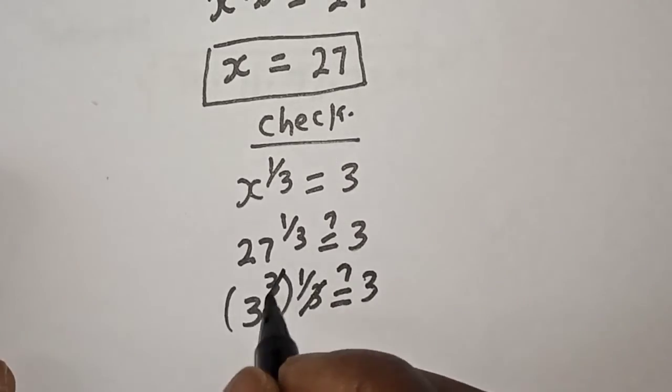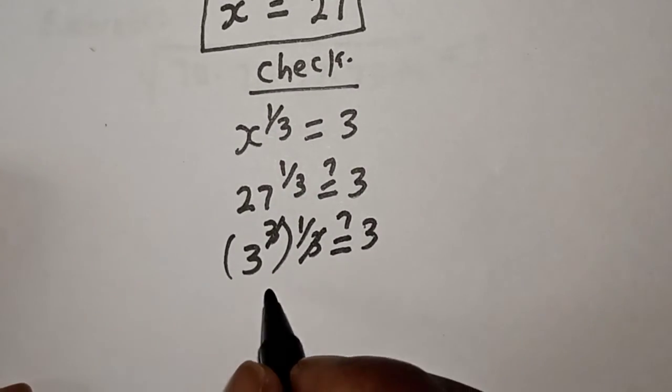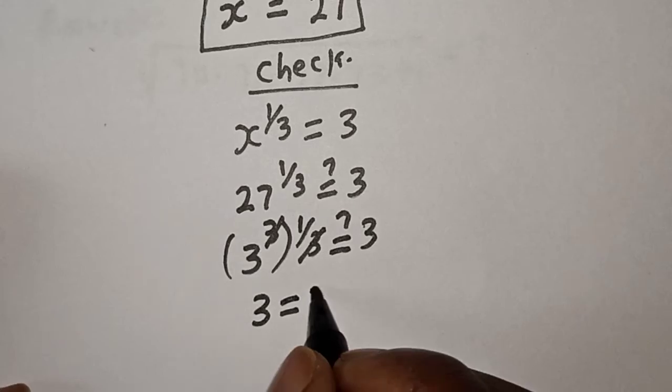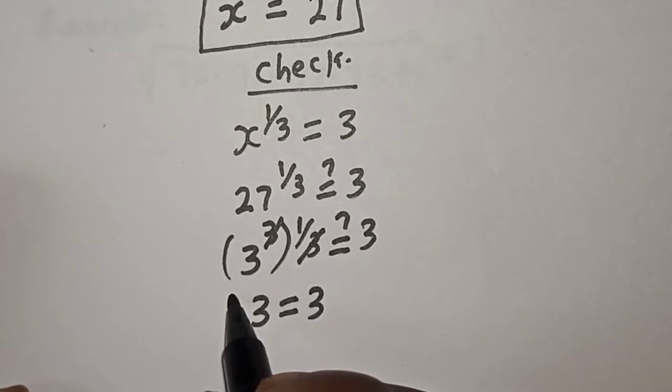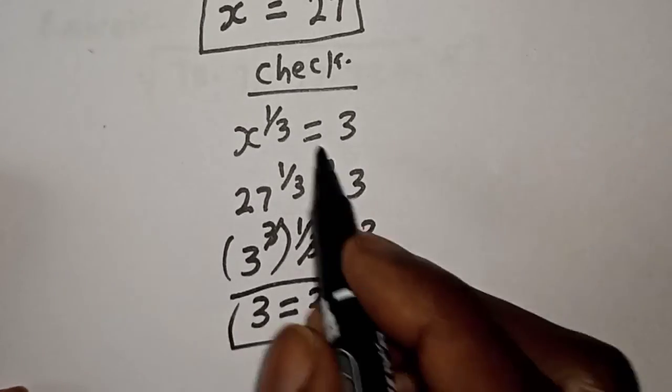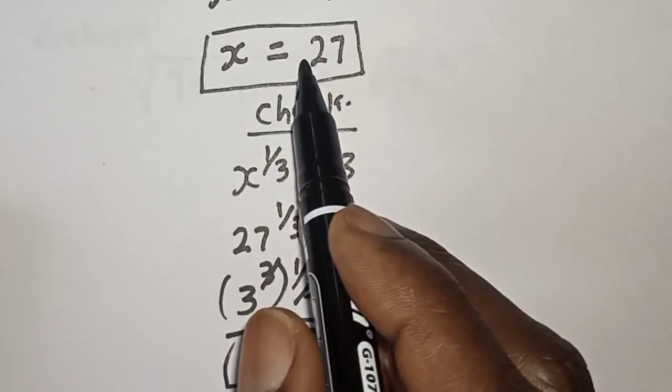Then this one, we cancel this. We have 3 is equal to 3. We satisfy the given equation at x is equal to 27.